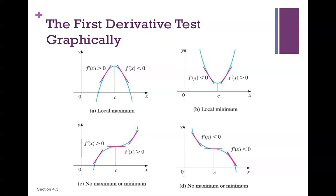Looking at the First Derivative Test graphically: where the derivative changes from positive to negative, there is a local max. Where it changes from negative to positive, there is a local min. Where there is no sign change, there is no minimum or maximum — same with the other cases of no sign change.